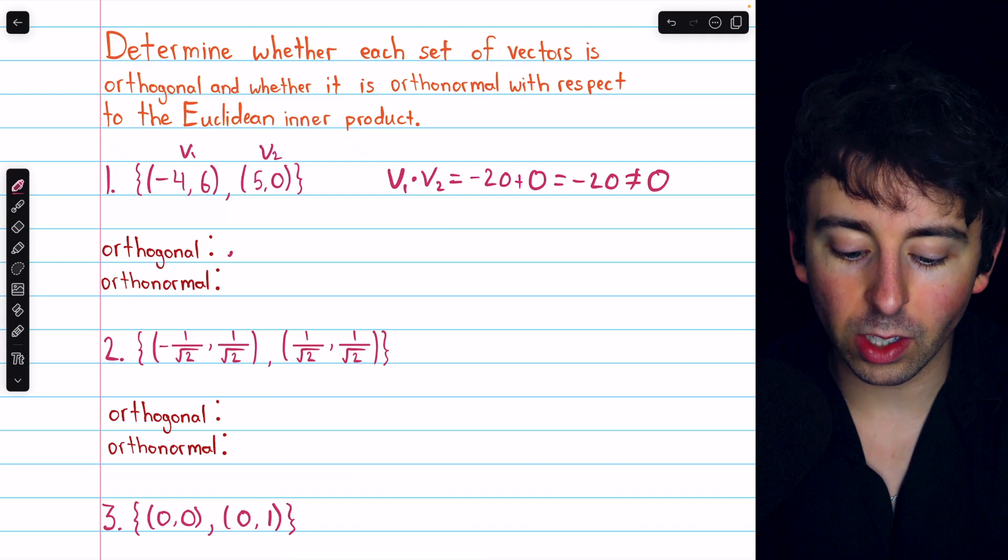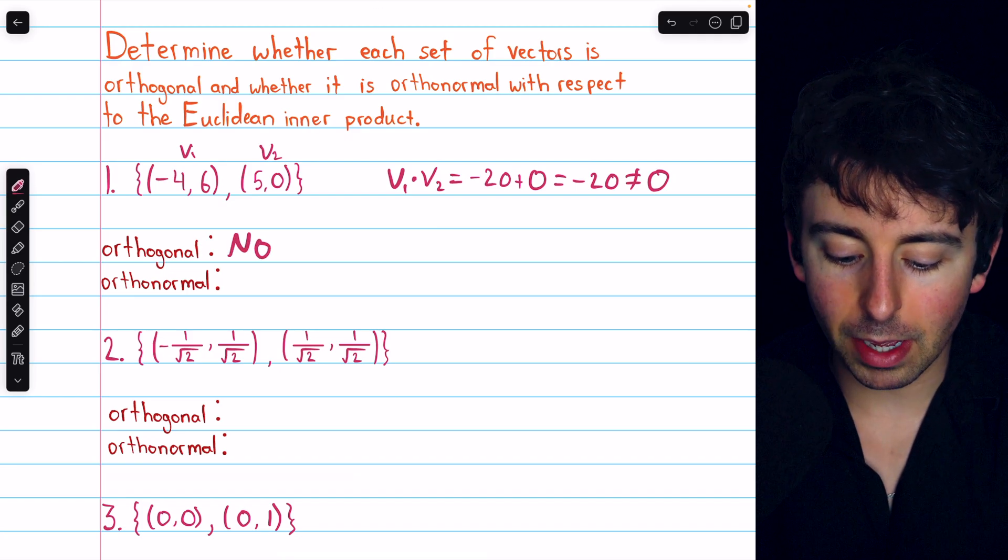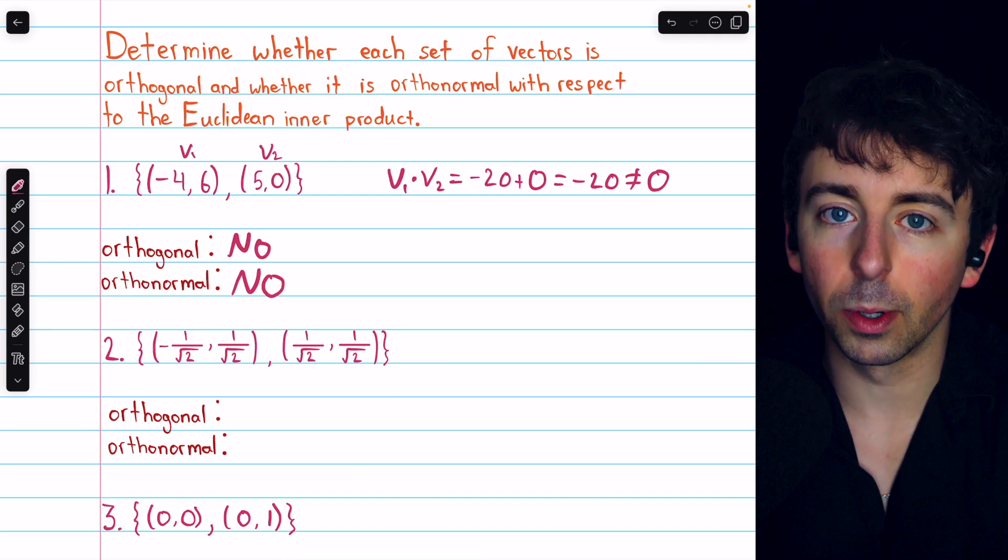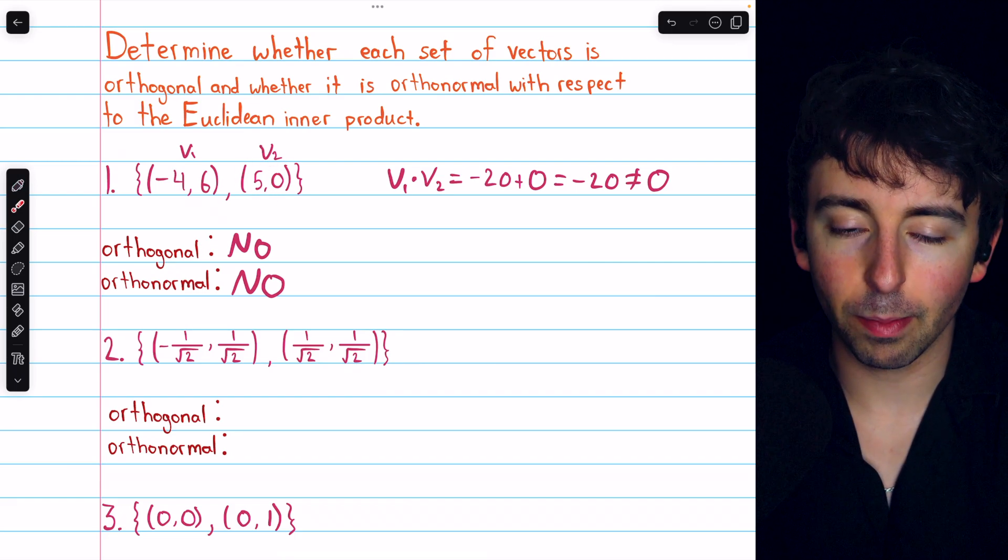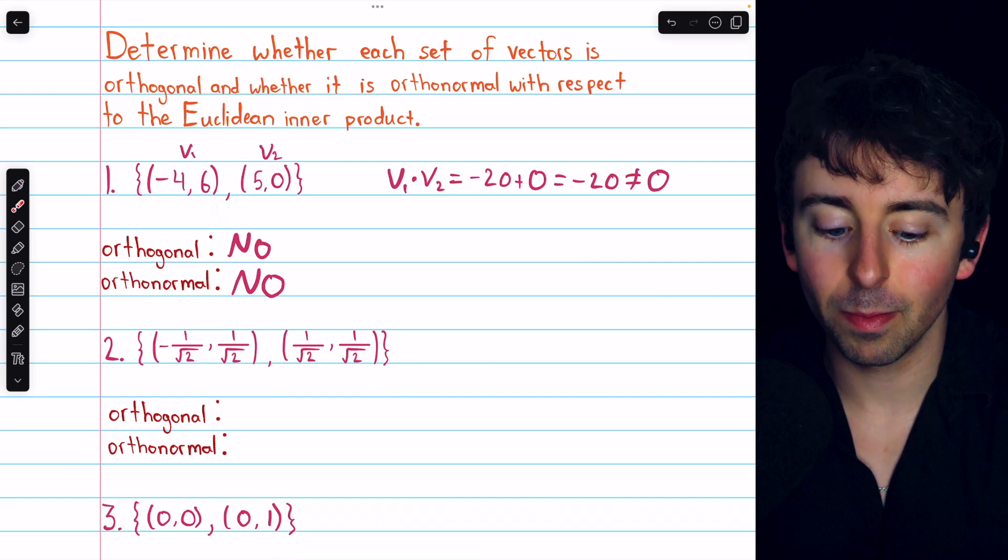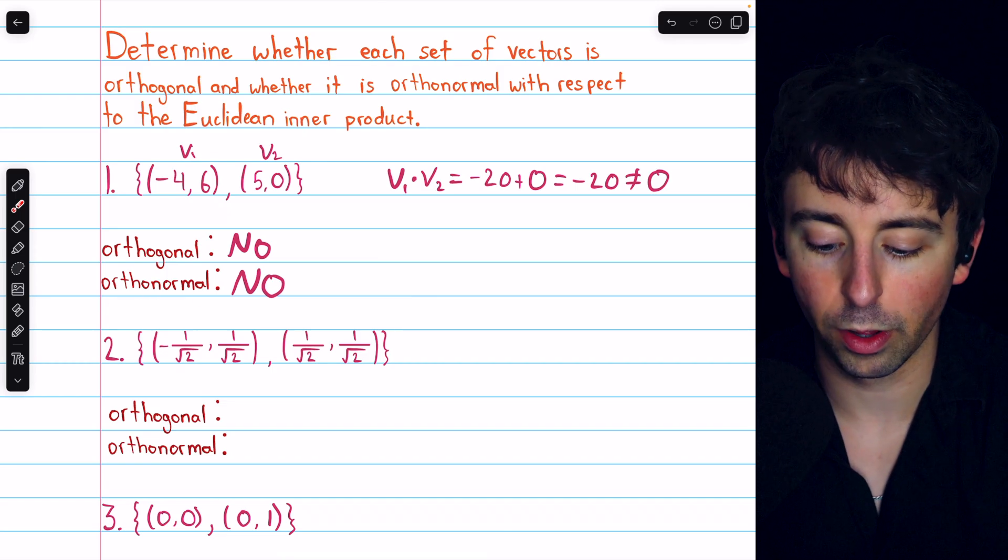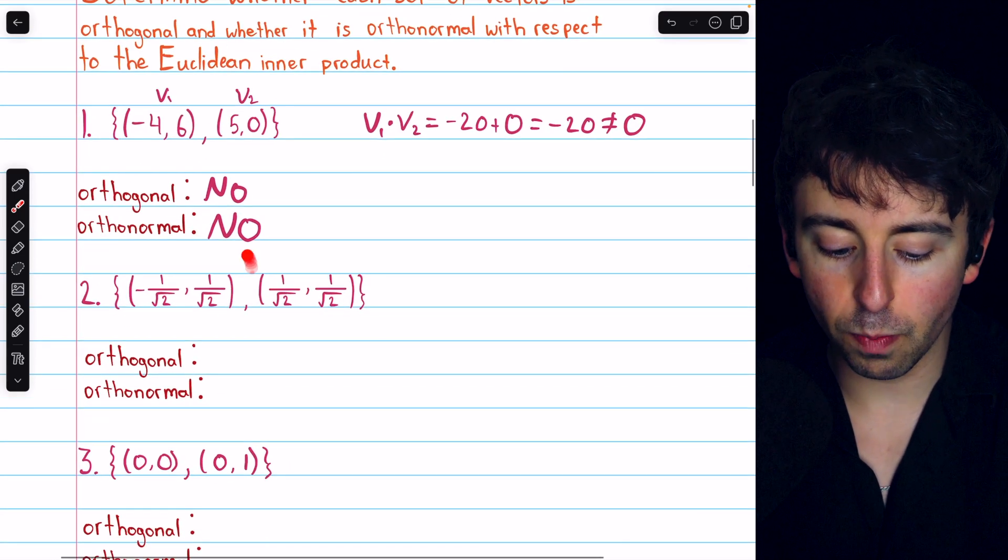Clearly, this dot product is not equal to 0, and so the vectors are not orthogonal. This immediately means that they can't be orthonormal either, and it's certainly easy to see that this vector, for example, is not a unit vector. So, no way these vectors are orthonormal.